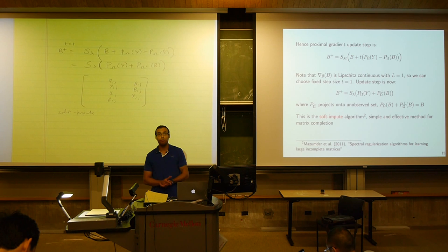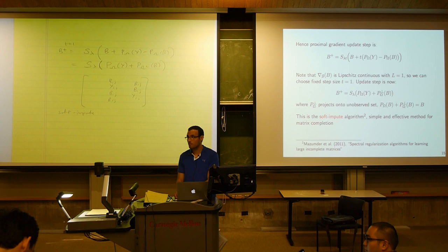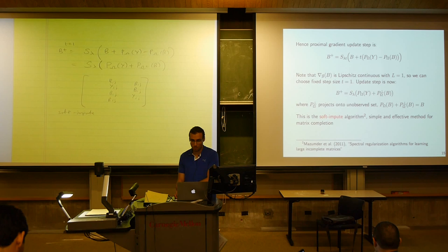This makes proximal gradient for this problem runnable on very large problems, though one has to be careful. This is related to PCA: if you fill missing entries with zeros and take the SVD, that's already a principal components analysis. In this algorithm, we're doing that repeatedly and updating the missing entries at each step, computing only as much of the SVD as needed before remaining singular values would be shrunk anyway.